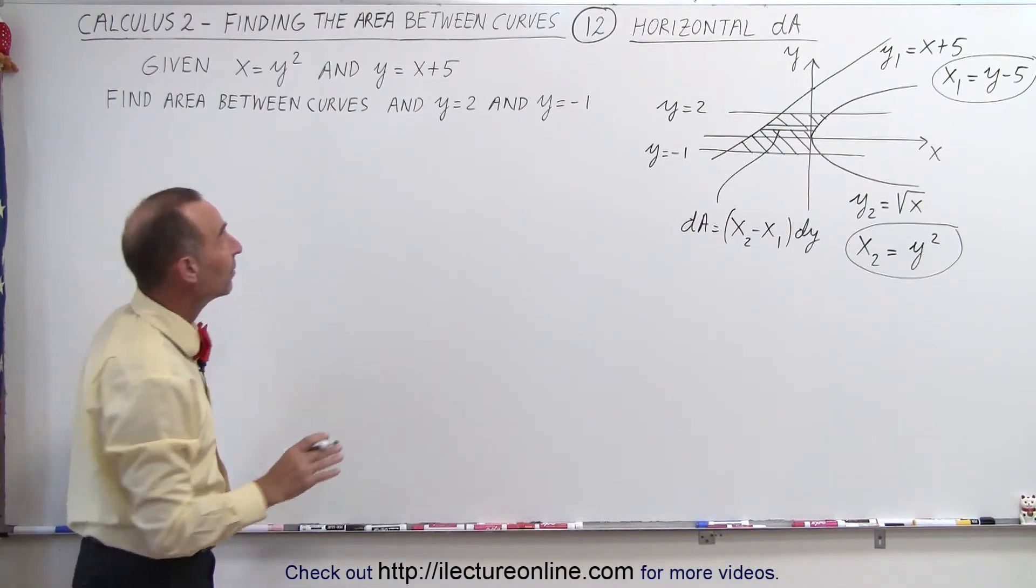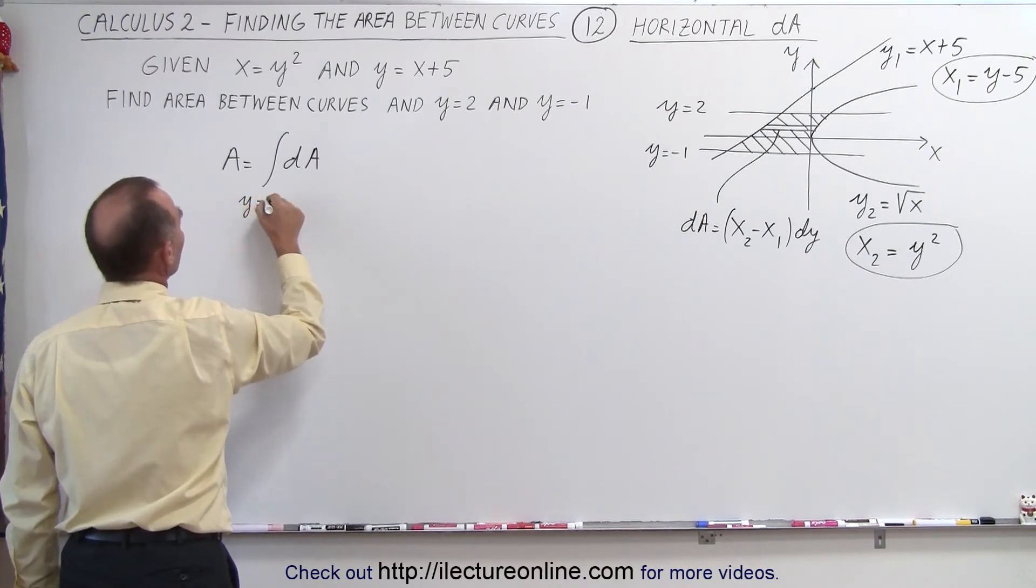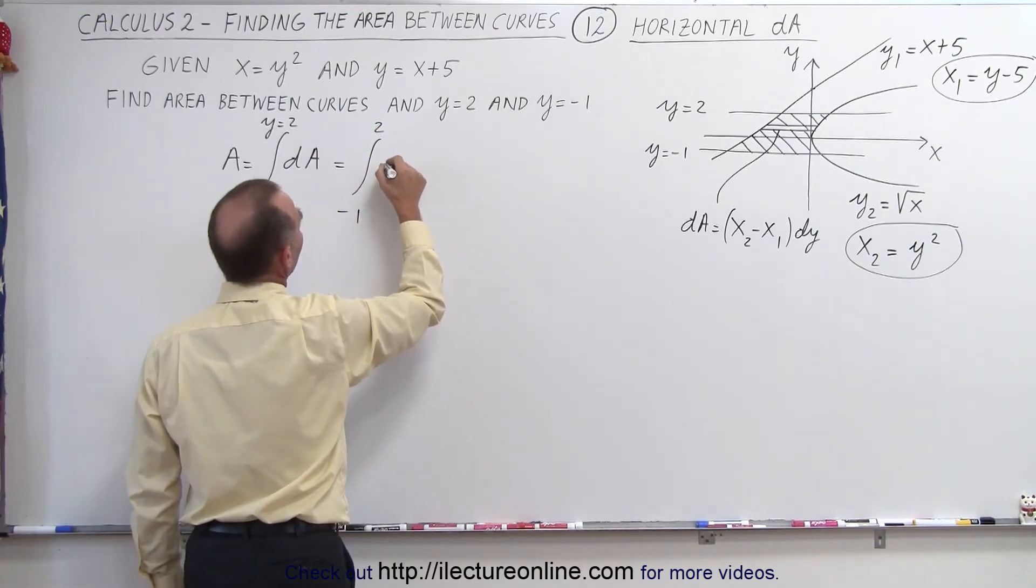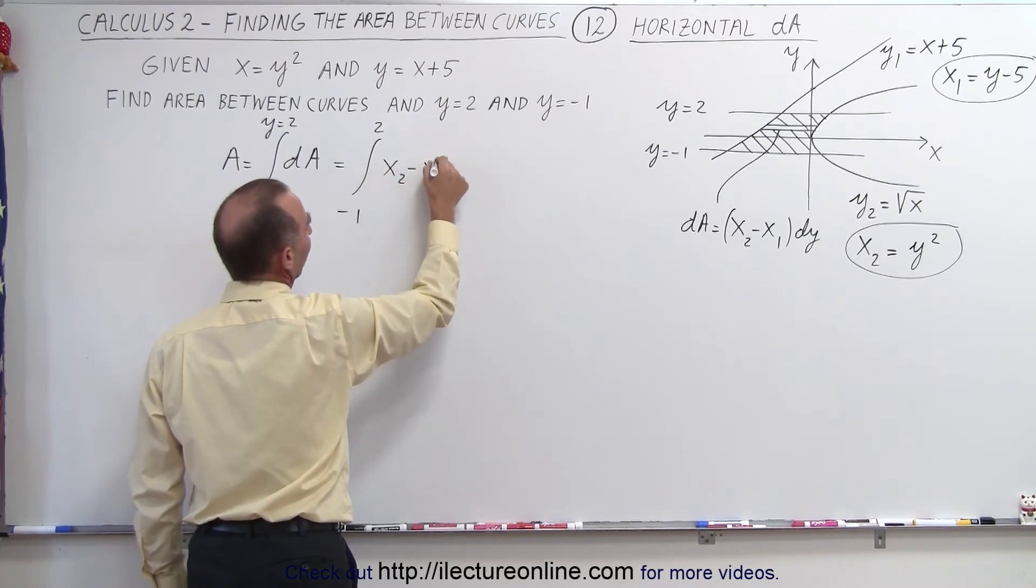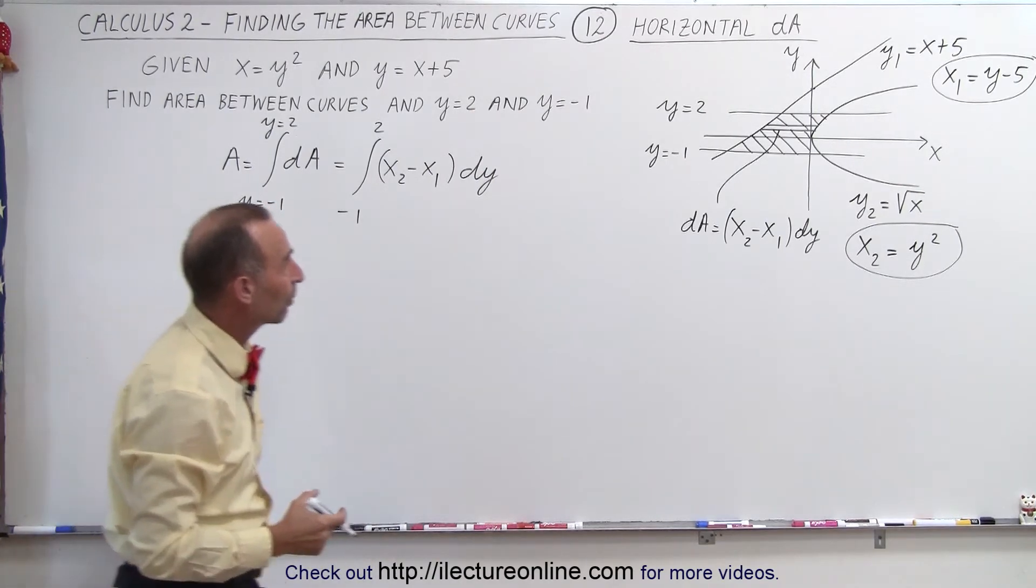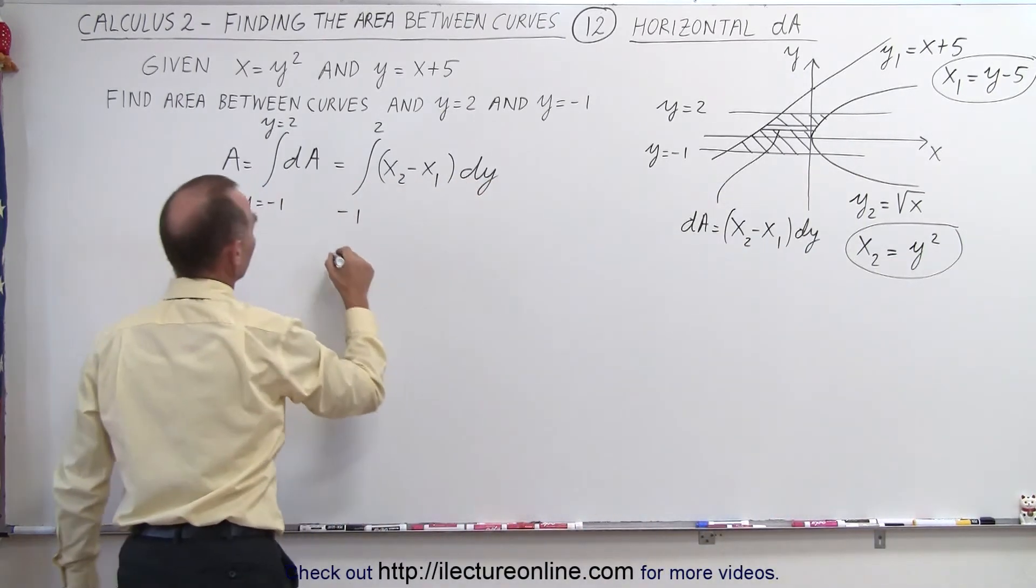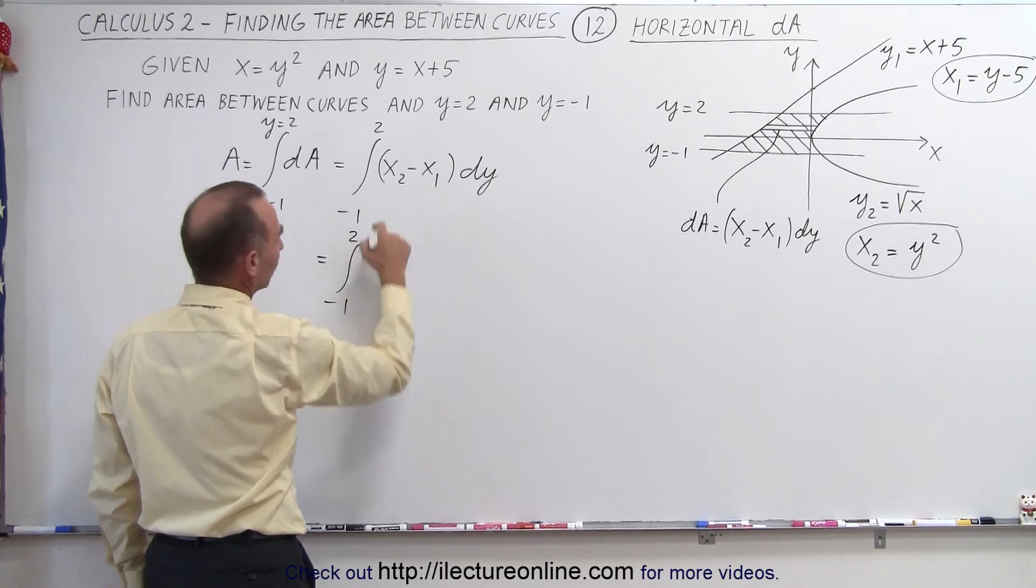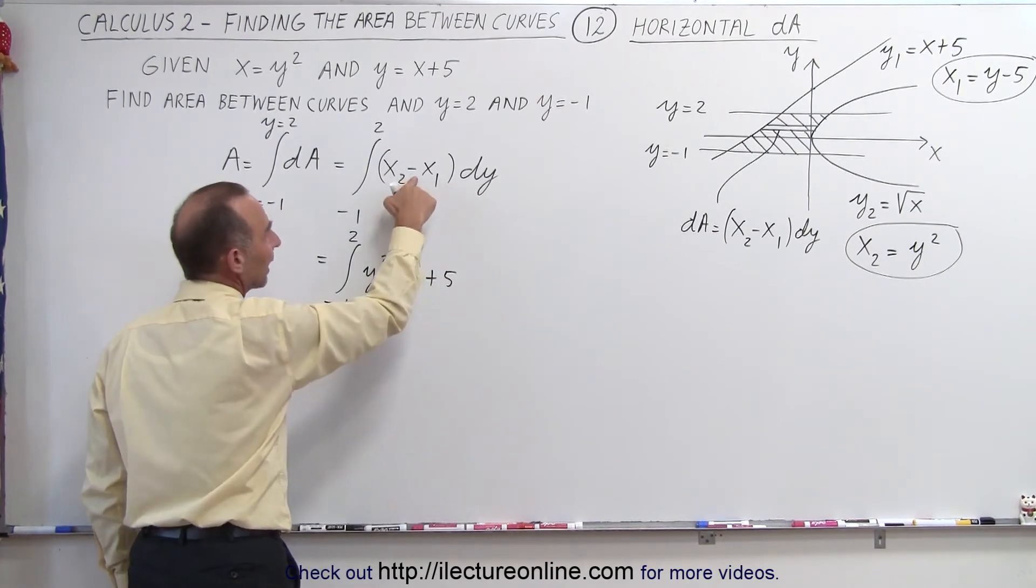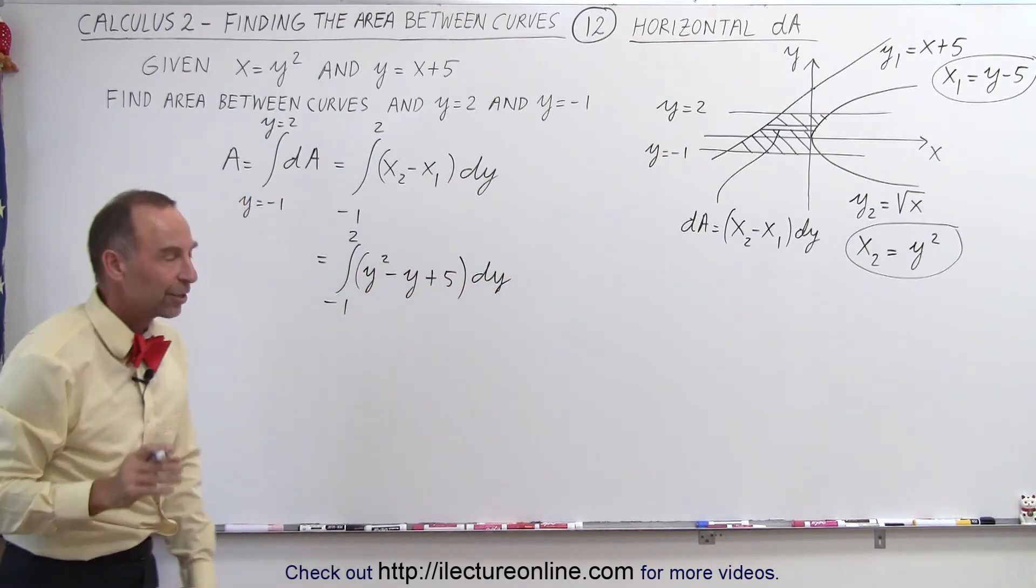That means that the area is going to be equal to the integral of all your dA's, and the dA's are going to run from y equals negative 1 to y equals 2, which is equal to the integral from minus 1 to 2. Your dA is going to be defined as x2 minus x1 times dy. Since you can't mix x and y's together, we have to write x in terms of y, so x1 is y minus 5, x2 is y squared. So this is going to be equal to the integral from minus 1 to 2 of y squared minus y minus 5, which is minus y plus 5, times dy. And that should give us the area between those two curves.